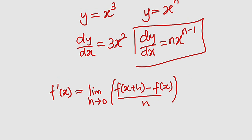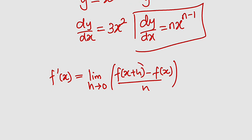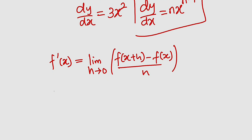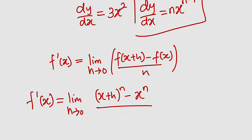Now let us substitute everything. Remember that our f of x is equal to x to the power of n. So for f of x plus h, we are going to replace x with x plus h. So we have f prime of x equal to the limit as h approaches 0 of x plus h to the power of n minus x to the power of n, whole divided by h.